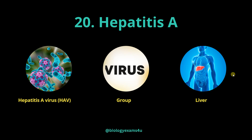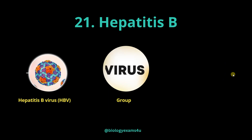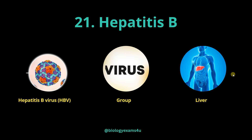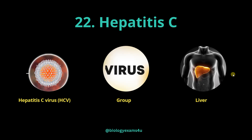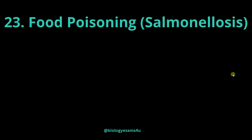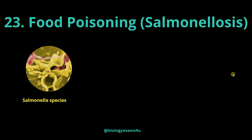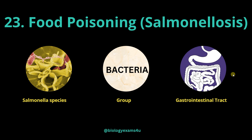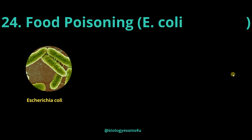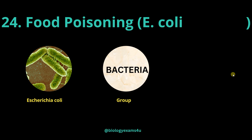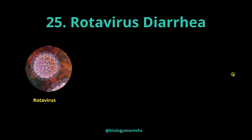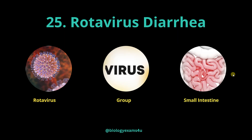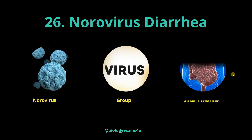Hepatitis A spreads primarily through contaminated food and water. Hepatitis B is caused by Hepatitis B virus that also infects the liver, with primary transmission through blood, semen or bodily fluids. Hepatitis C is caused by Hepatitis C virus and also infects the liver; the virus spreads through blood-to-blood contact such as poorly sterilized medical equipment or shared needles. Food poisoning or Salmonellosis is caused by Salmonella species, a bacterium affecting the gastrointestinal tract. Food poisoning by E. coli is caused by Escherichia coli and also affects the gastrointestinal tract, primarily the large intestine. Rotavirus diarrhea is caused by Rotavirus affecting the small intestine. Norovirus diarrhea is caused by Norovirus and also affects the small intestine.